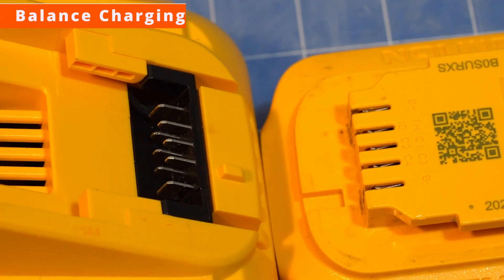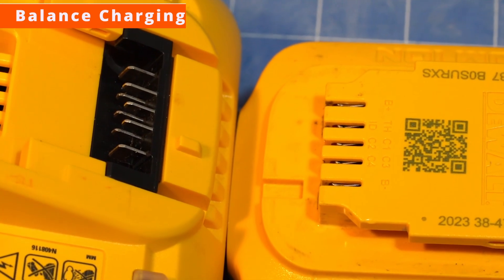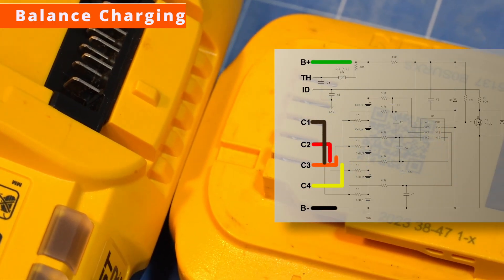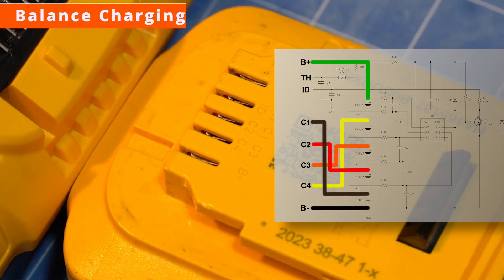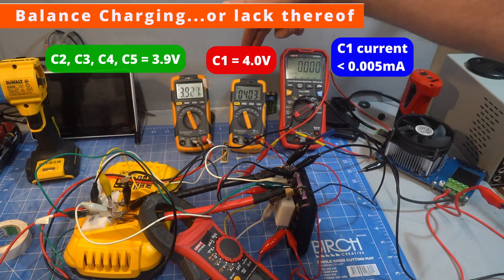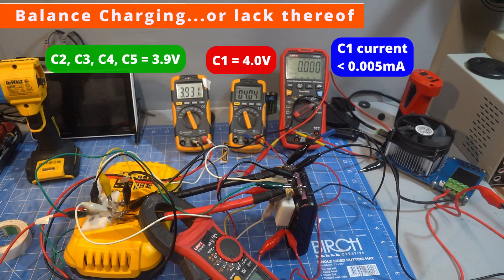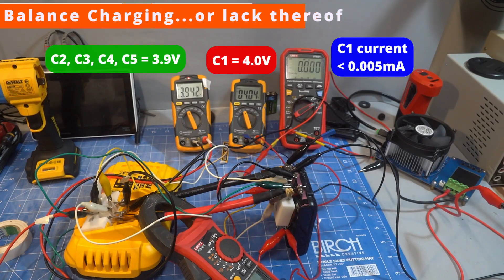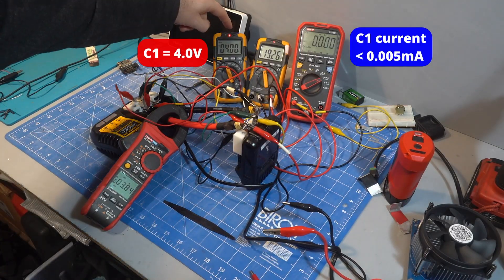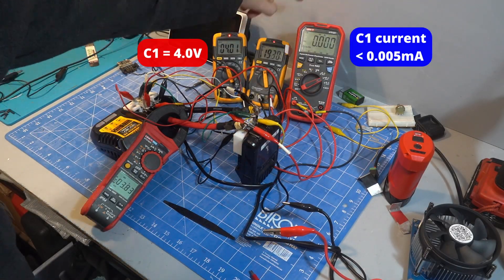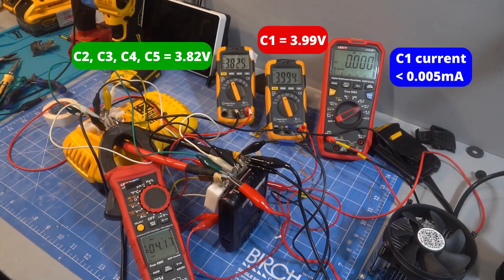Now we get to the part where DeWalt takes a big L. Despite the chargers having pin access to all the cells, as far as I can tell, DeWalt chargers do not balance charge. I had a hard time believing this so I tested it multiple times and even bought this newer charger just to be sure. I pushed a cell higher and lower but never saw any current through the cell pins.